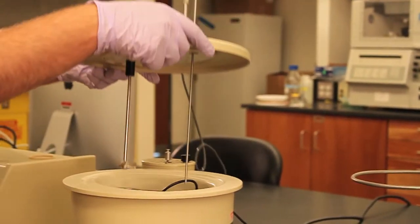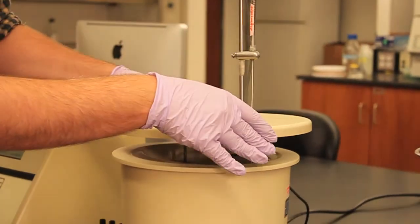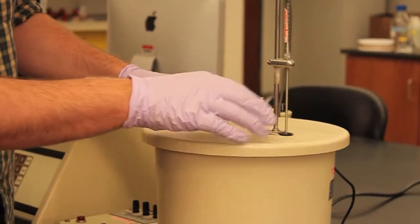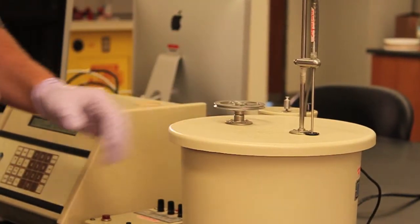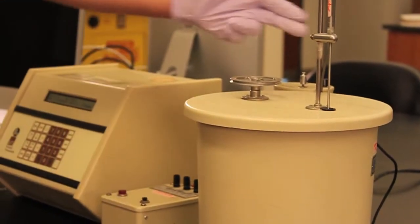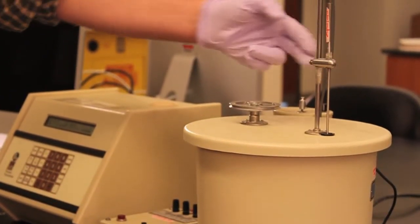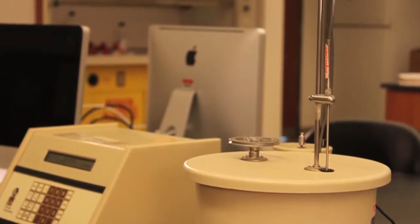Place the top onto the calorimeter, making sure that the stirrer turns freely and does not hit the sides. The other rod that goes into the pail is a precision thermocouple. You will read off the voltages of the thermocouple and convert these voltages to temperatures later.